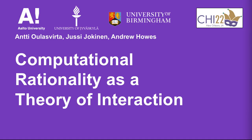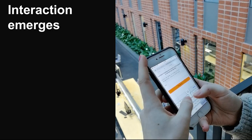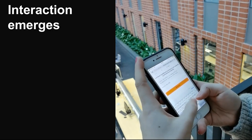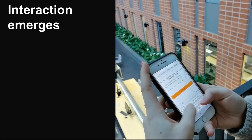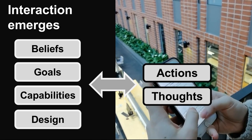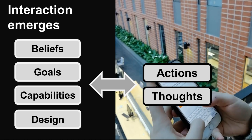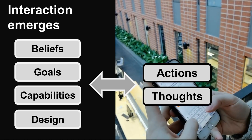This paper presents a synthesis of computational rationality as a theory of human-computer interaction. A key departure point is the observation that interactive behavior is highly adaptive — the way we act and think in interaction emerges as a function of our beliefs, goals, capabilities, and the design. Understanding this emergence is the primary goal of this theory.